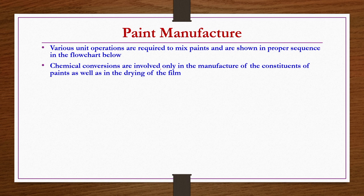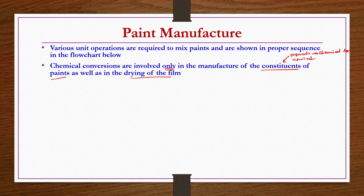Various unit operations are required to mix paints. Chemical conversions are involved only in the manufacture of the constituents of paints — such as pigment manufacturing — and during drying of the film. Oils are used in the liquid vehicle to enhance film-forming and to aid proper drying. Dryers and additives may also be required.